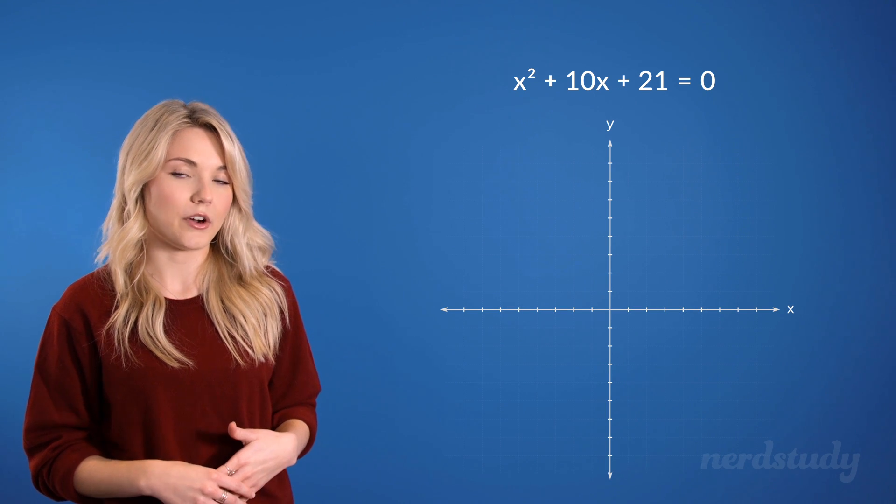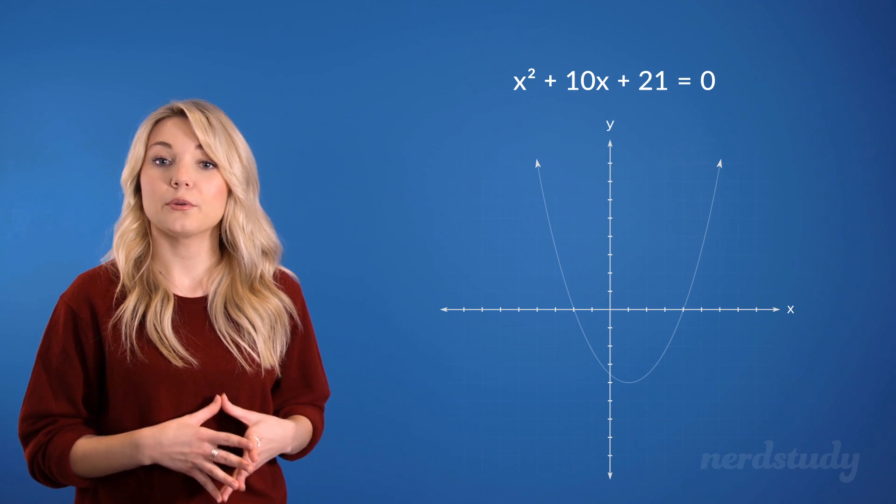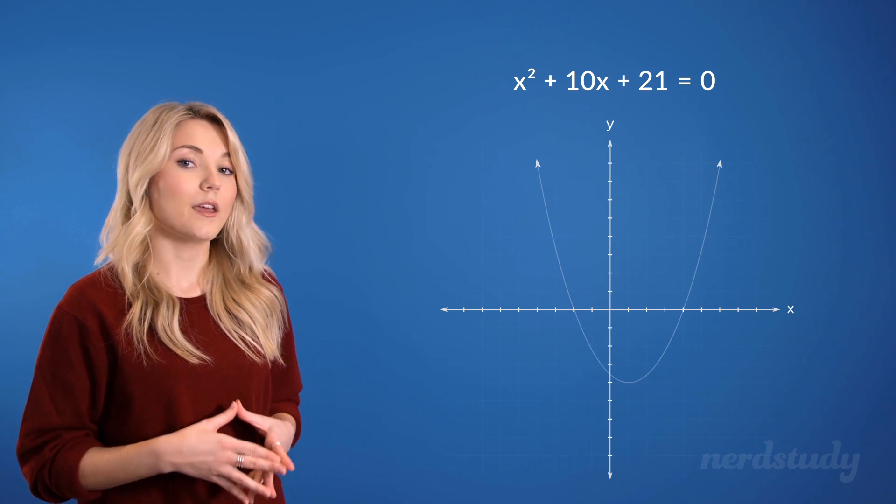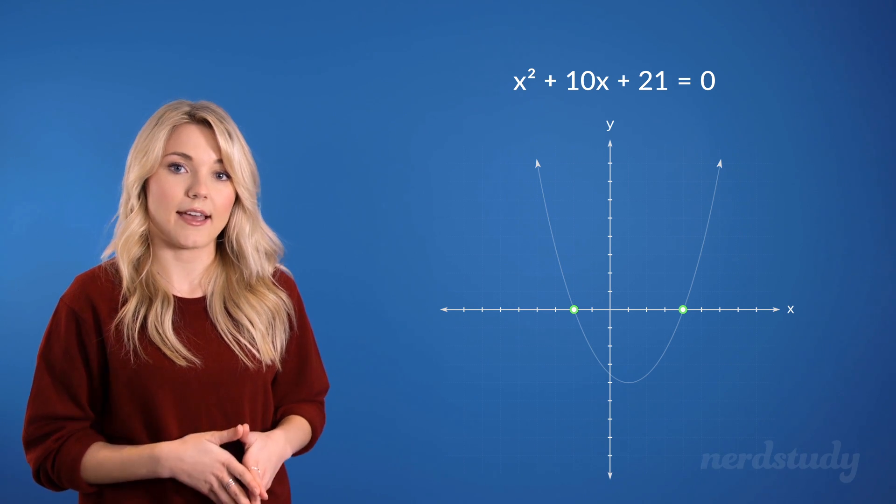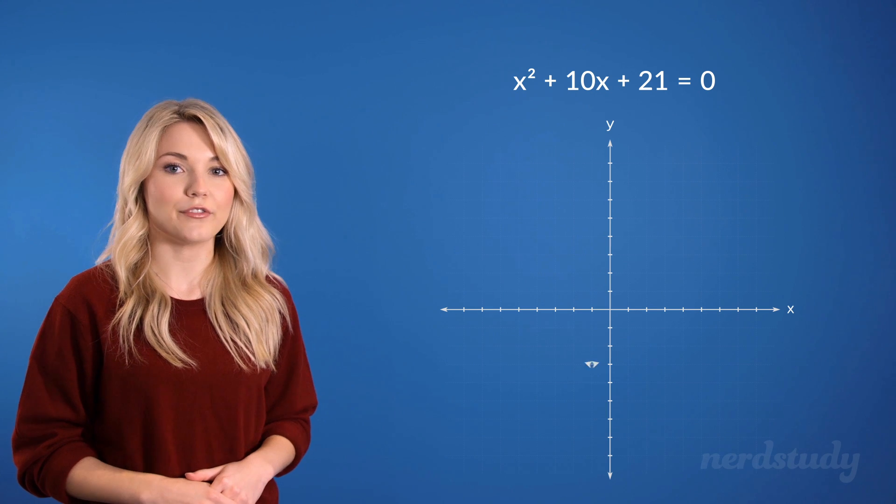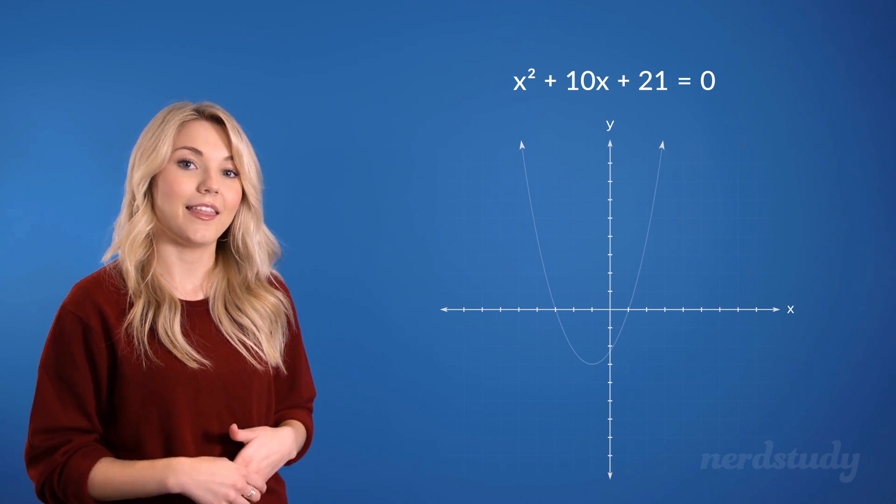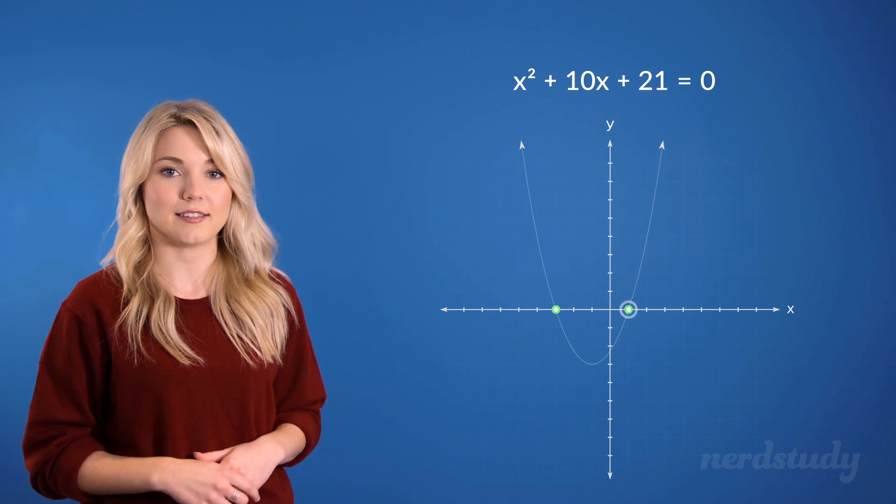We don't know exactly how to draw this parabola yet, other than the fact that it points up. So if it were to look like this, then y would be 0 at these two points. We can also refer to this as two solutions. There's also a possibility for the graph to look like this, and therefore the y would be 0 when the x's are at these points instead.